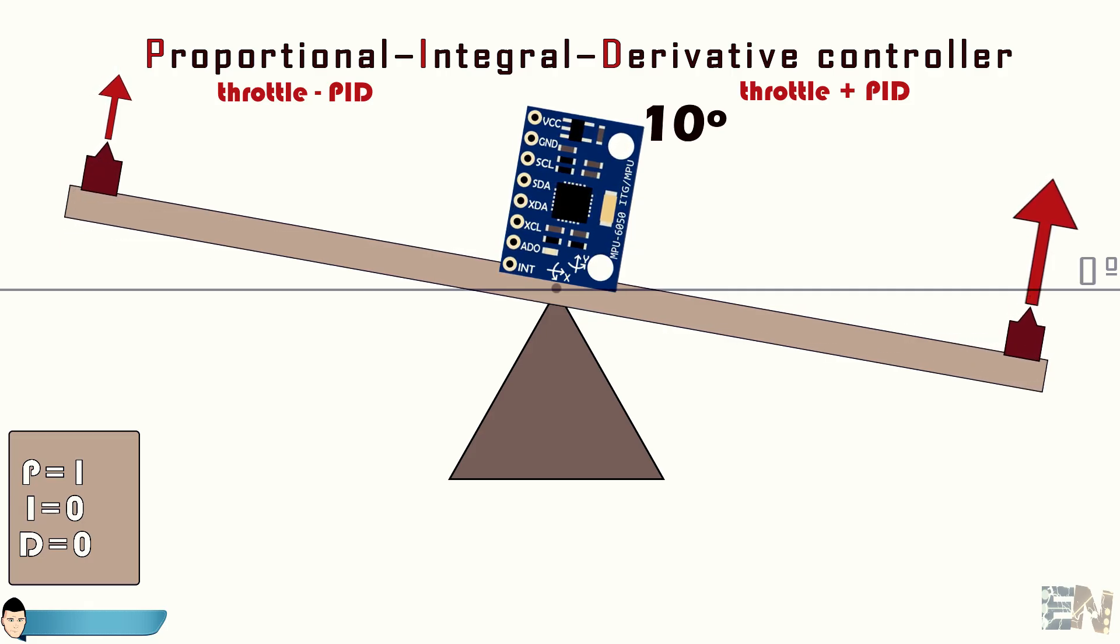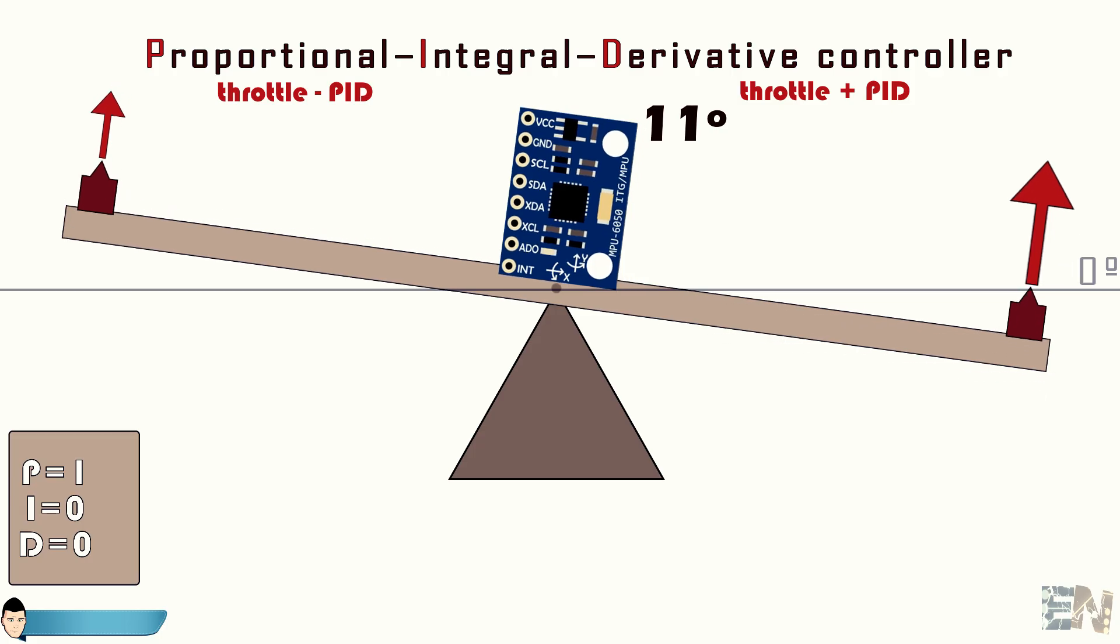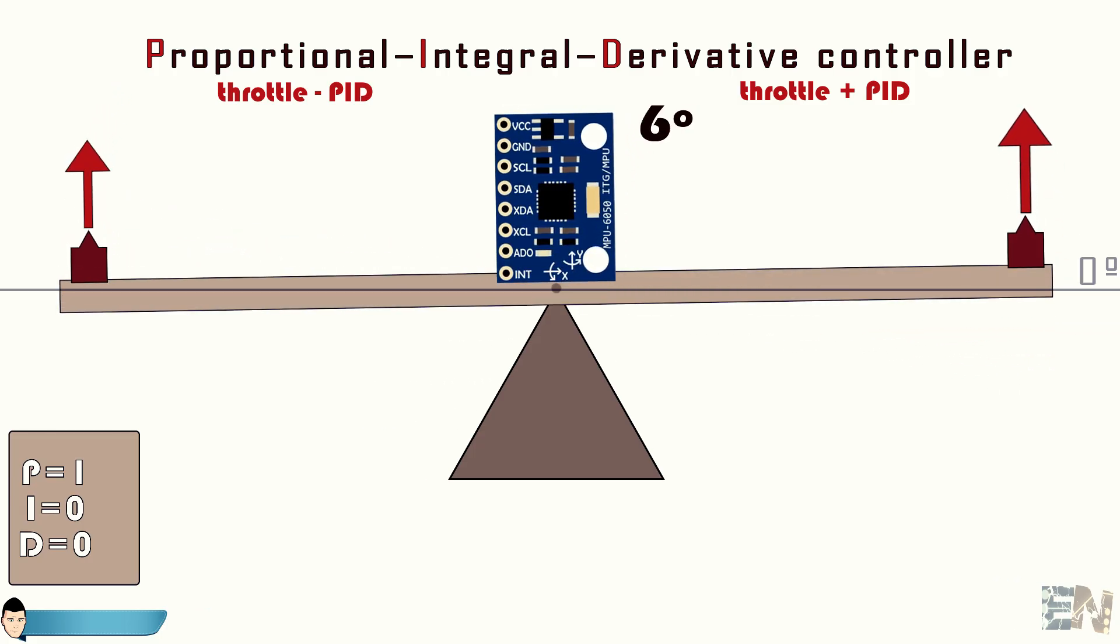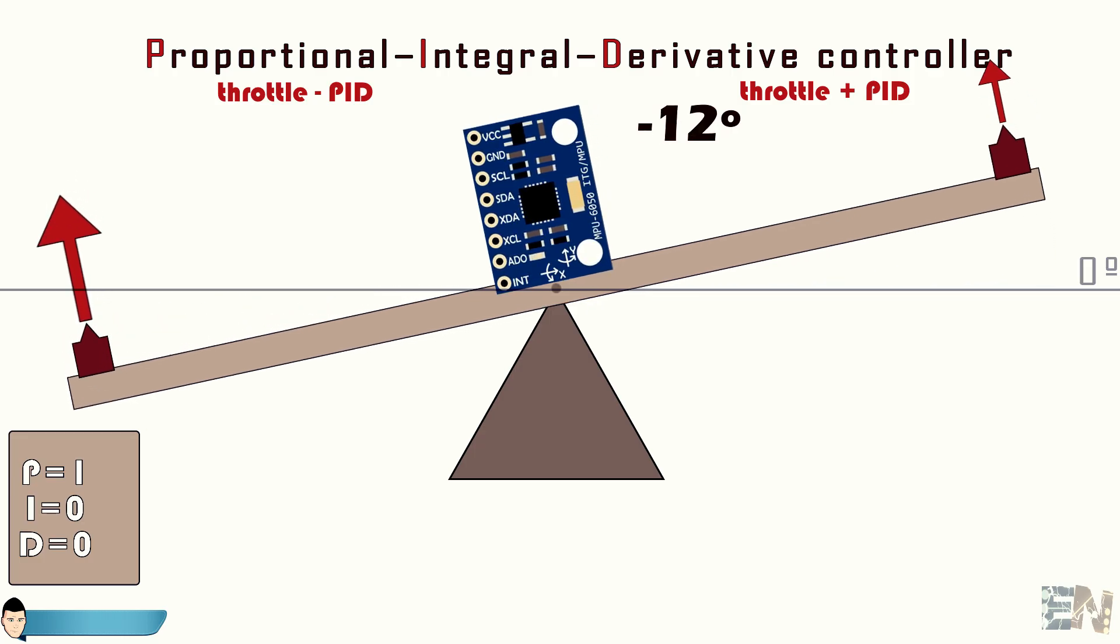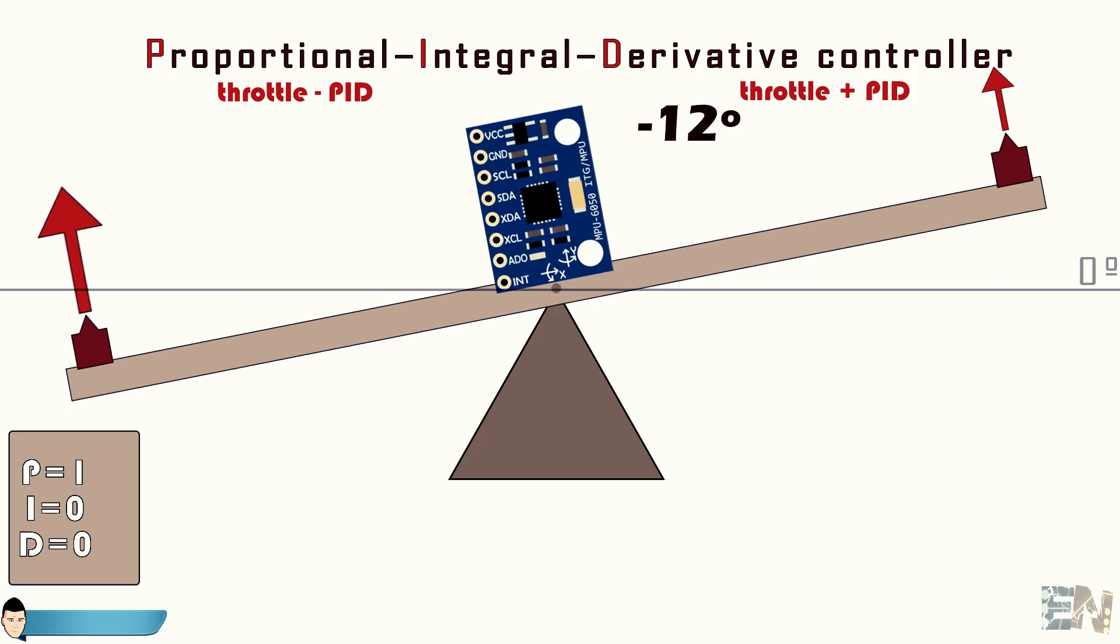As the bar leans to the right the PID value increases proportional to the angle. As bigger the angle gets the right motor will spin faster each time and the left motor slower since we sum the PID value to one and subtract it to the other. That will make the bar start leaning to the opposite side.